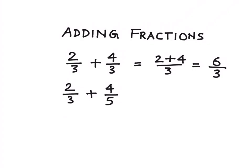So in order to add unlike fractions, we need to convert both the fraction numbers into equivalent fractions such that they have a common denominator, or in other words, we convert the unlike fractions into like fractions.